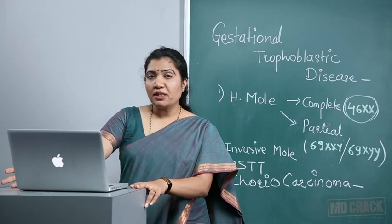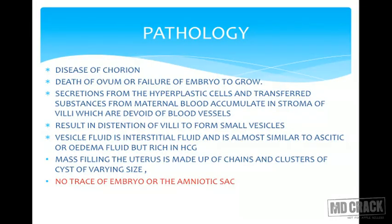In the pathology, it is a disease of the chorion: the ovum dies and the embryo fails to grow. Secretions from hyperplastic cells accumulate in the stroma of avascular villi, causing distension to form small vesicles. The vesicular fluid is interstitial fluid — similar to ascitic or edema fluid — and is rich in HCG. The mass filling the uterus consists of chains or clusters of these small vesicles.